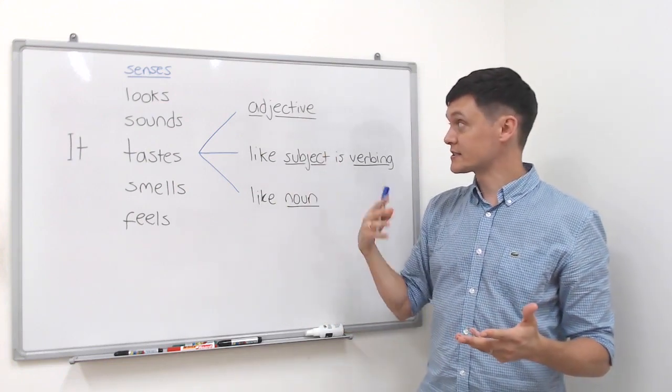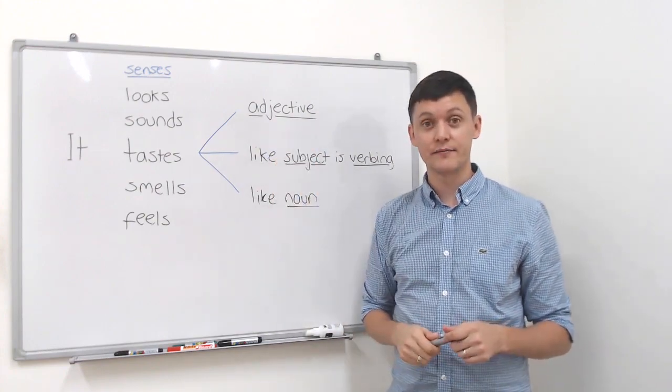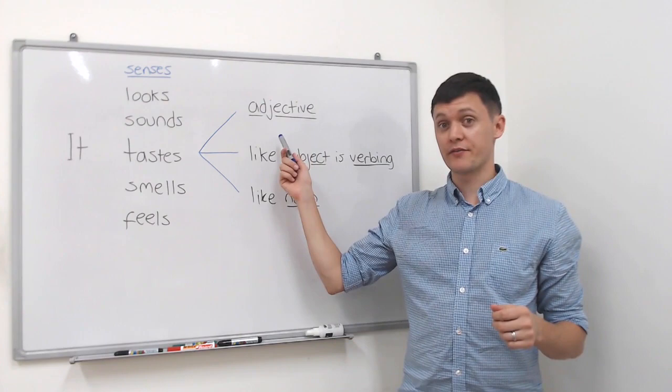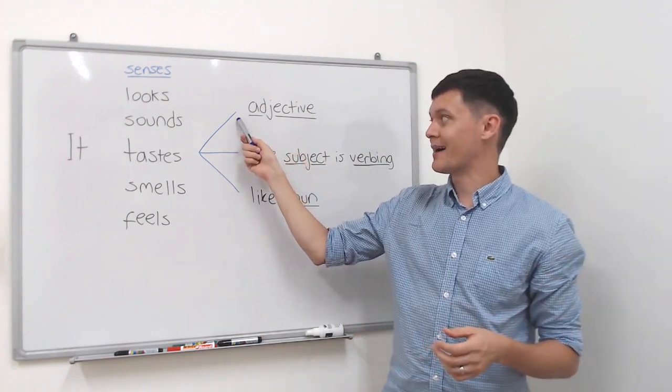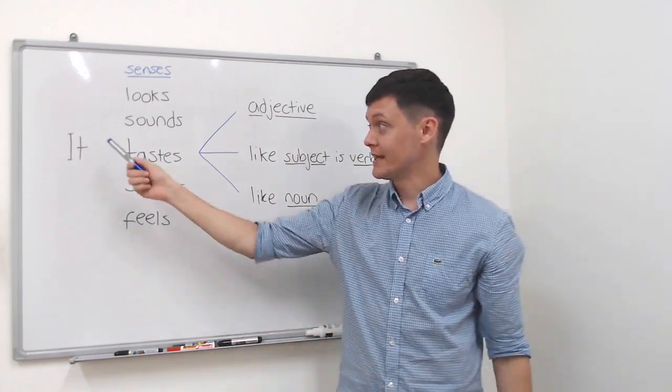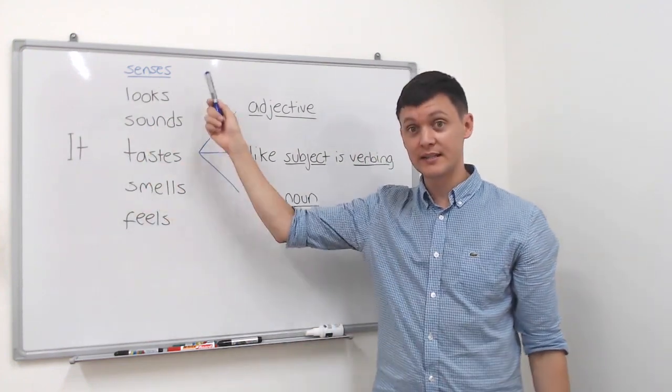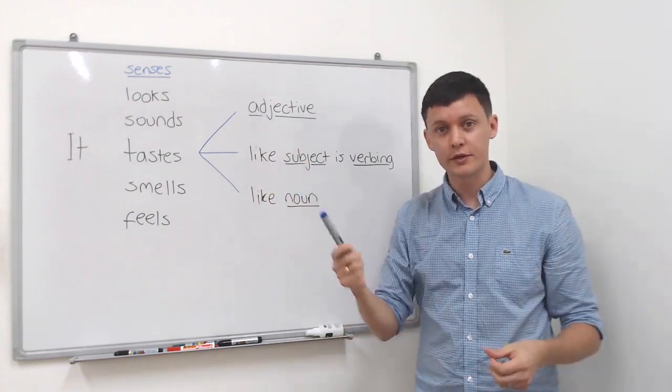So we're going to start by looking at the easiest one which is the adjective. With adjectives you can use any adjective there and you don't have to worry about anything else in this structure. So simply it will be 'it', one of these and then an adjective such as good, bad, hot, cold.